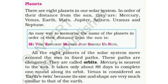Unki duri ke according planets ke naam yaad rakhne ka easy tarika hai ye. Ye sentence yaad kar lijiye: My Very Efficient Mother Just Served Us Nuts. My se Mercury, Very se Venus, Efficient se Earth, Mother se Mars, Just se Jupiter, Served se Saturn, Us se Uranus, aur Nuts se Neptune. Bas aapko ye sentence yaad rakhna hai, phir dekhiye aap kabhi nahi bhoolenge 8 planets ke naam according to distance.